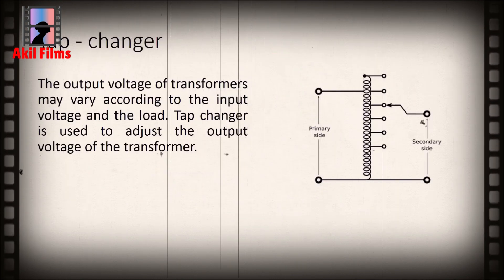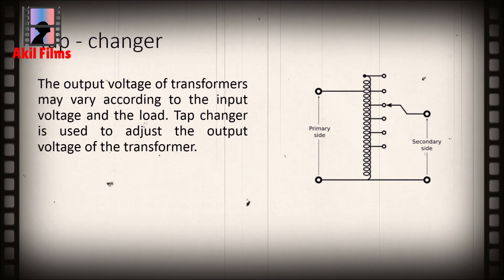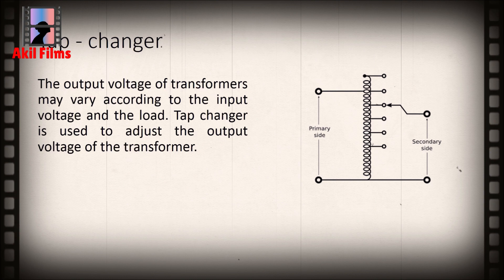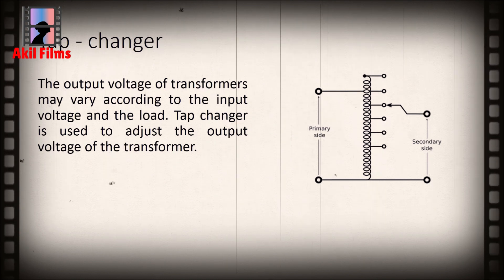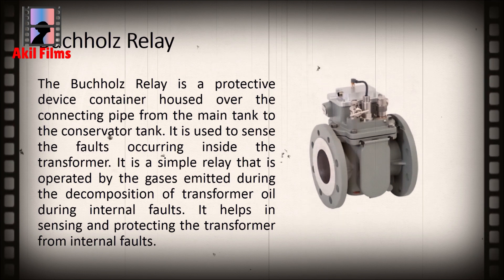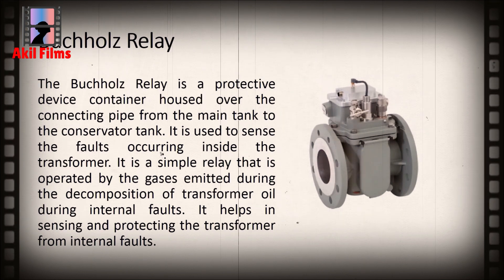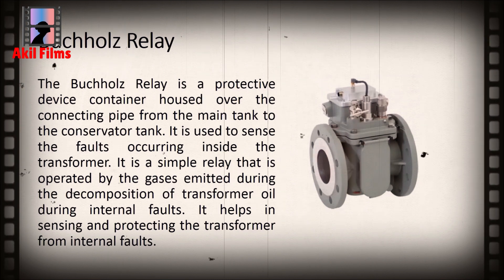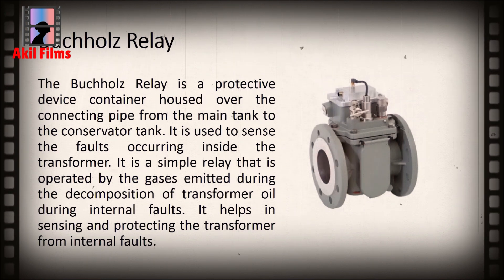The output voltage of transformers may vary according to the input voltage and the load. The tap changer is used to adjust the output voltage of the transformer. The Buchholz relay is a protective device housed over the connecting pipe from the main tank to the conservator tank, and it is used to sense faults occurring inside the transformer.